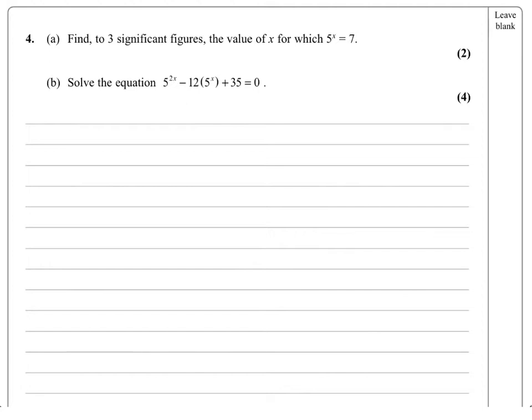In part A, we've been asked to find, to three significant figures, the value of x for which 5^x equals 7. Now, if you're anything like me, I can never remember the rearrangement going this way. So just write out however you remember it. I always remember it going this way.